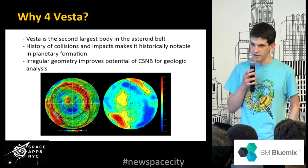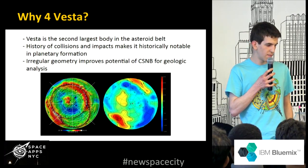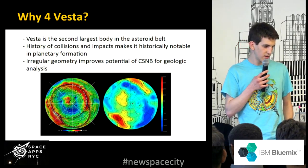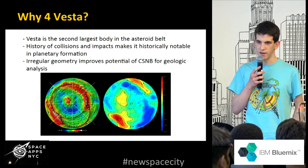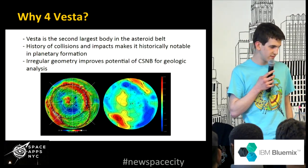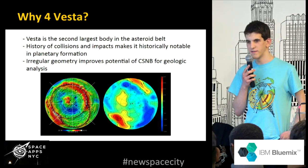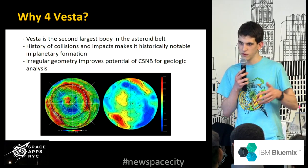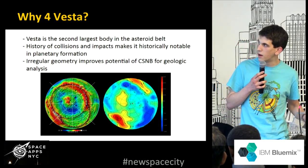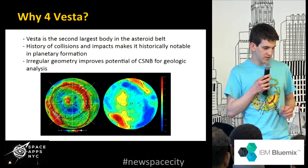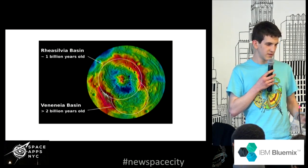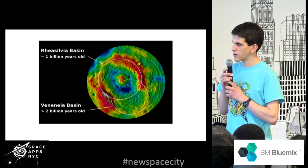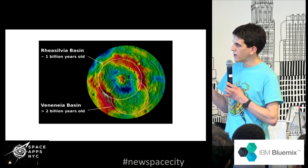So why would we want to look at Vesta? It's just a little asteroid. Vesta is actually the second largest asteroid in the asteroid belt, and it has a huge history of collisions and impacts that make it really notable and a great topic for scientific exploration. Future missions may actually visit it or deposit a sample retrieval device. It also has irregular non-spherical geometry, which makes it more interesting — with a sphere, it's rather hard to convert it directly to a map that's foldable with a closed boundary.